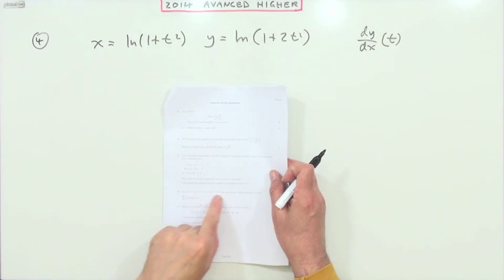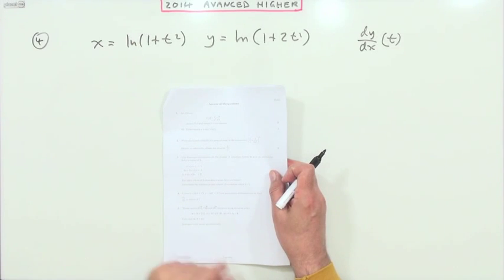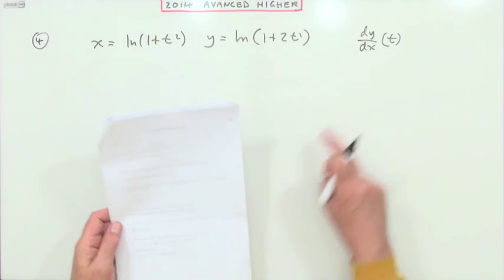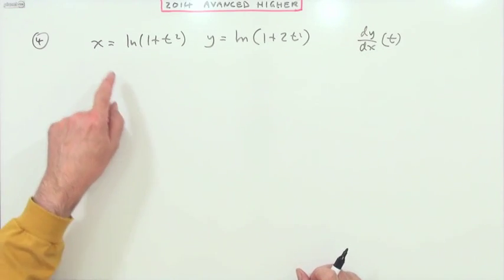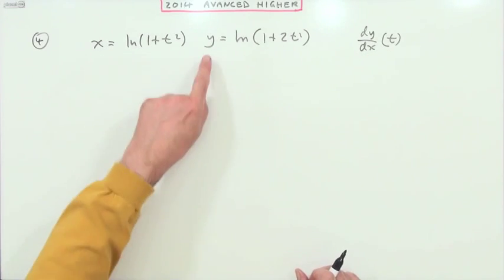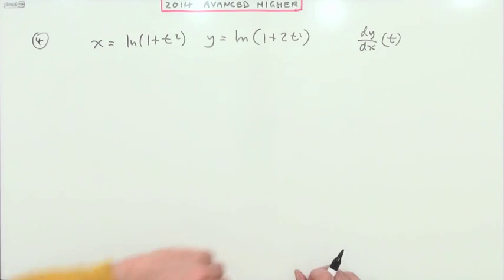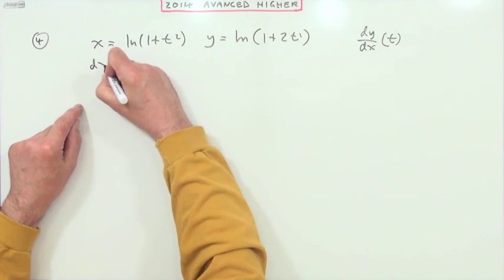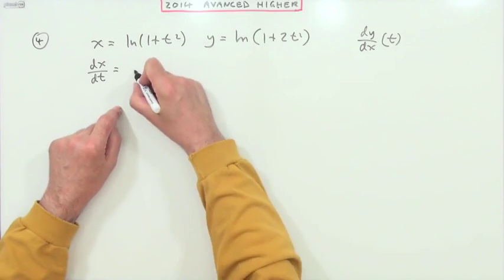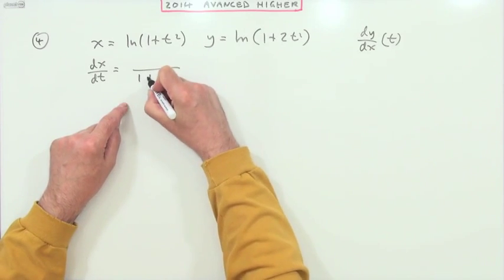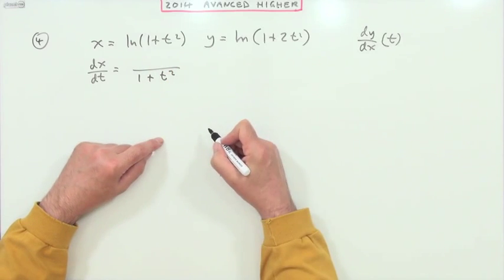Number four, parametric differentiation. Use parametric differentiation to find dy/dx in terms of t, because x is expressed as a function of t, y is expressed as a function of t. Well that means that dx/dt would be, log is one over, so that's one over one plus t squared.